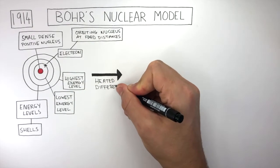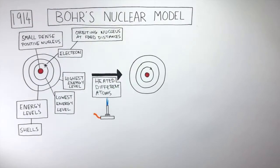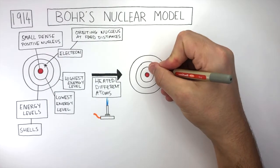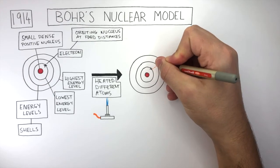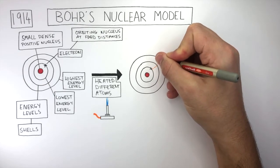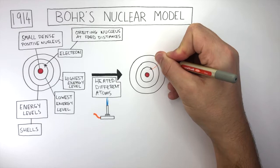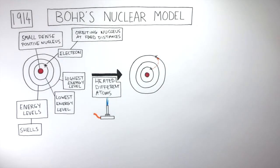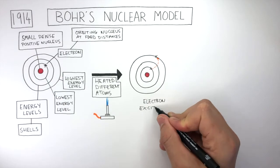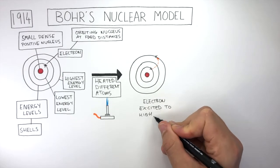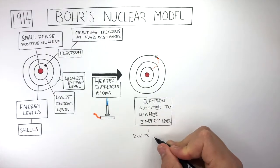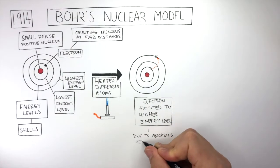Bohr heated different atoms. These atoms absorbed heat energy, causing the electrons at lower energy levels to become excited and move up to higher energy levels, as shown by this orange line. So the electron was excited to a higher energy level due to absorbing heat energy.